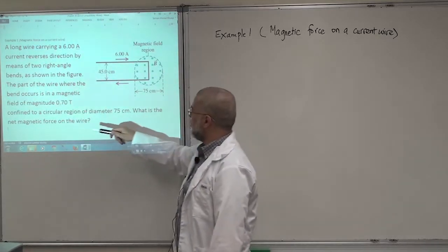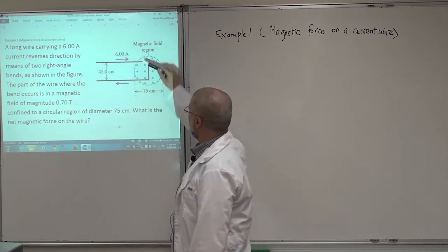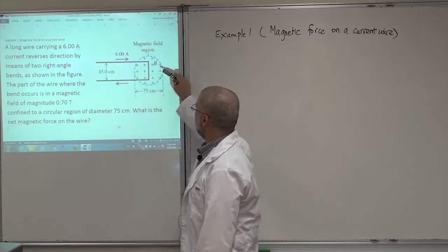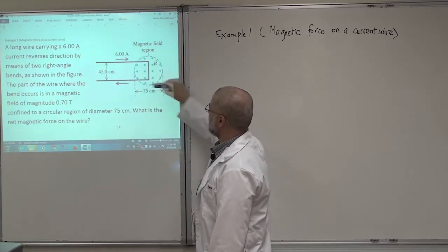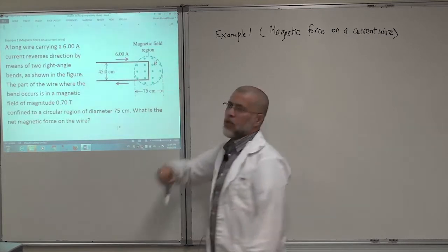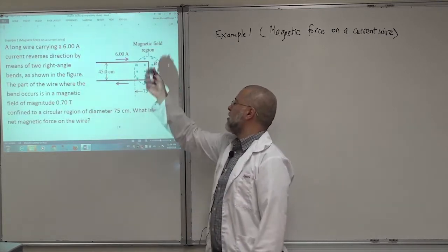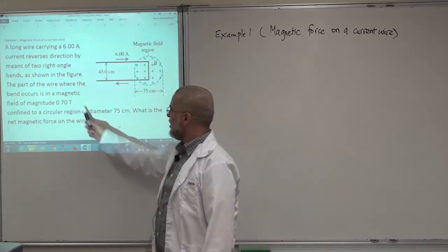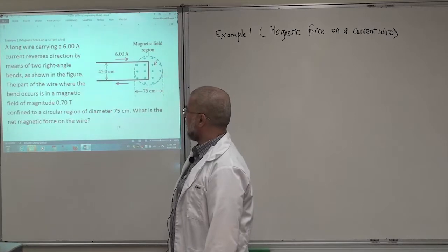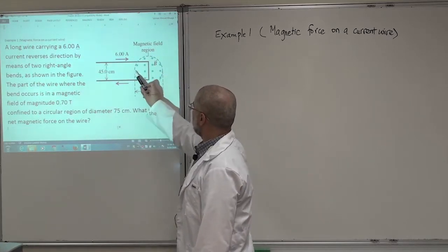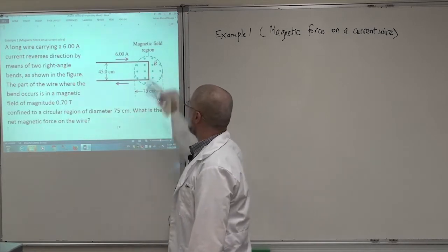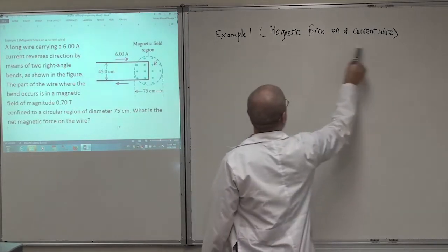He's describing the figure. The part of the wire where the bend occurs is in the magnetic field — you can see it here. There's a magnetic field only in this portion, and it is out of the page. A dot means it's coming out of the board. This is the magnitude of the magnetic field, 0.7 tesla, confined to a circular region of diameter 75 centimeters.